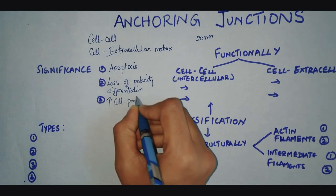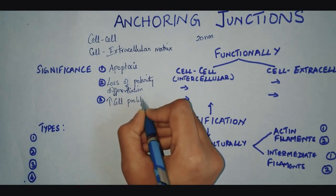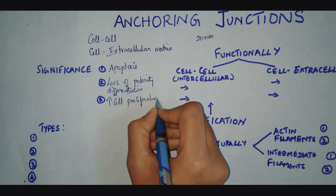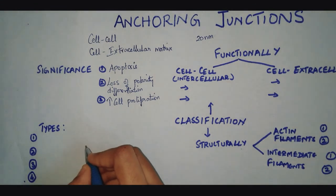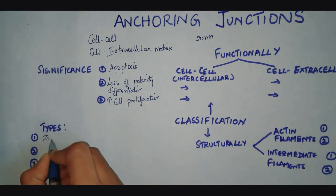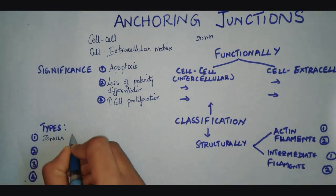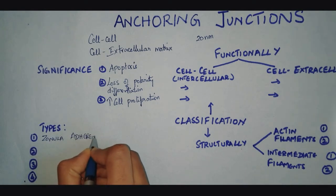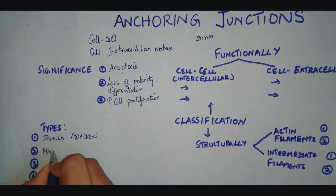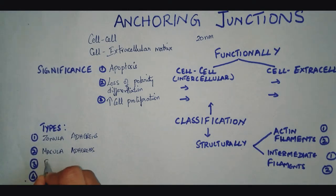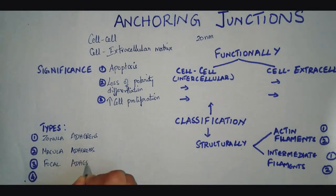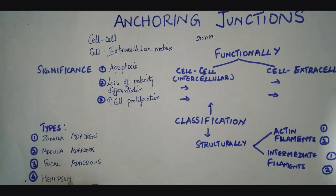Now we are going to see what are the different types of anchoring junctions. There are four types: the first one is the zonula adherens, then it is the macula adherens, the third type is focal adhesions, and then it is the hemidesmosomes.